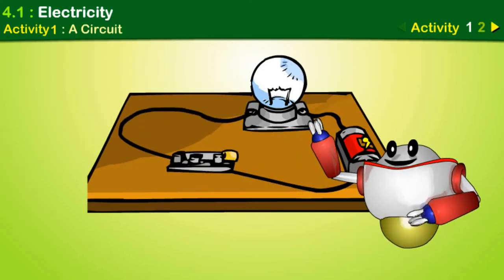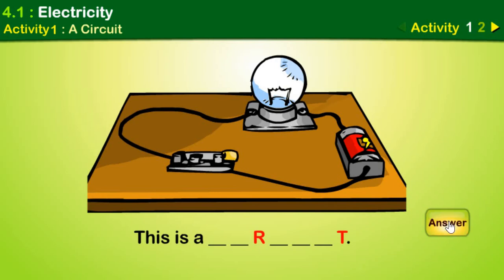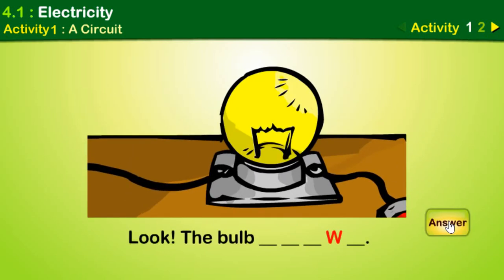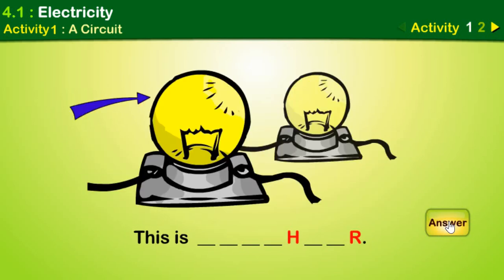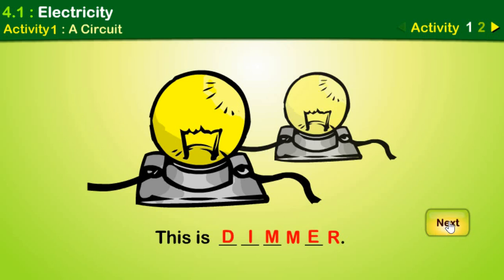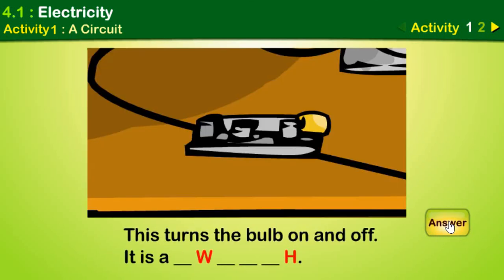Let's solve the word puzzle. This is a circuit. The bulb glows! This is brighter. This is dimmer. This turns the bulb on and off. It is a switch.